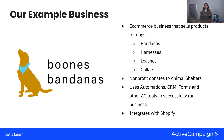Let's talk about our example business. Our example business is Boone's Bandanas — it's an e-commerce store that sells products for dogs. It's actually named after my dog. We sell things like leashes, harnesses, collars, and all those different things. We're also a nonprofit business that donates to animal shelters, so for every bandana you buy, we donate a bandana.